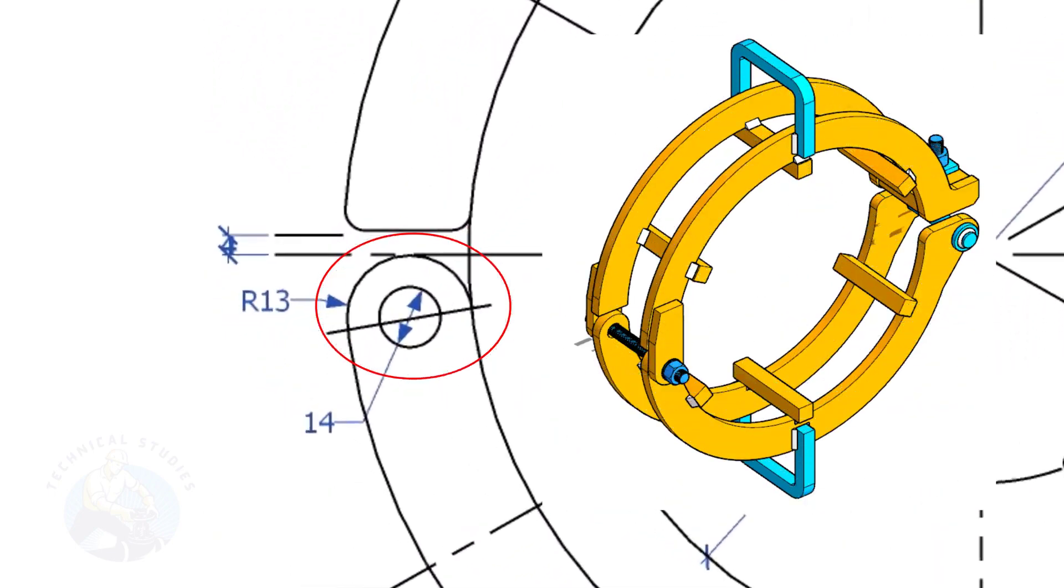Mark a half circle as shown, punch mark the center of the hole. There are two numerous items like this. Tack weld the two pieces and drill it together.